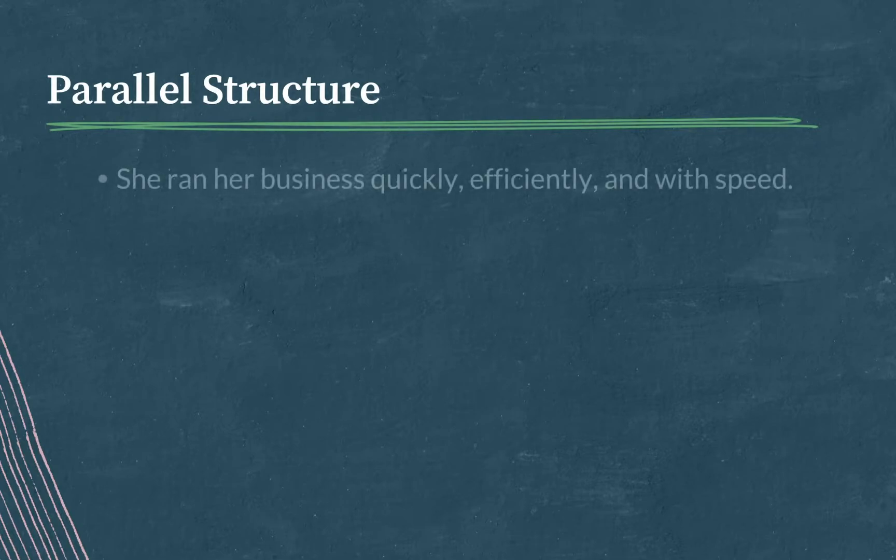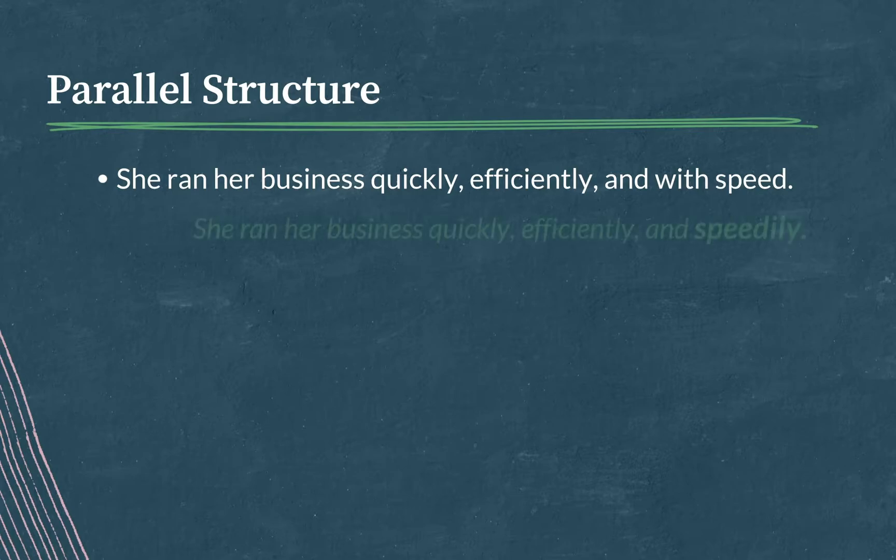So for example, this is not parallel. She ran her business briskly, efficiently, and with speed. That's not parallel, but this is. She ran her business briskly, efficiently, and speedily. I wanted to make them all match, so I changed with speed to speedily. I turned it into an adverb to match briskly and efficiently, and that's parallel structure in a nutshell. Make them match.